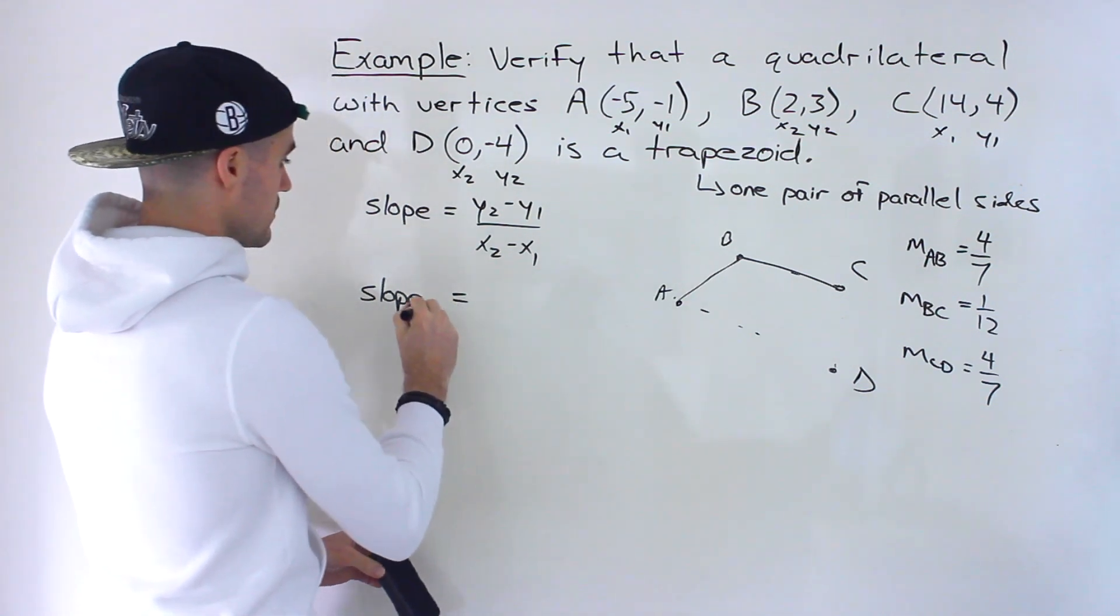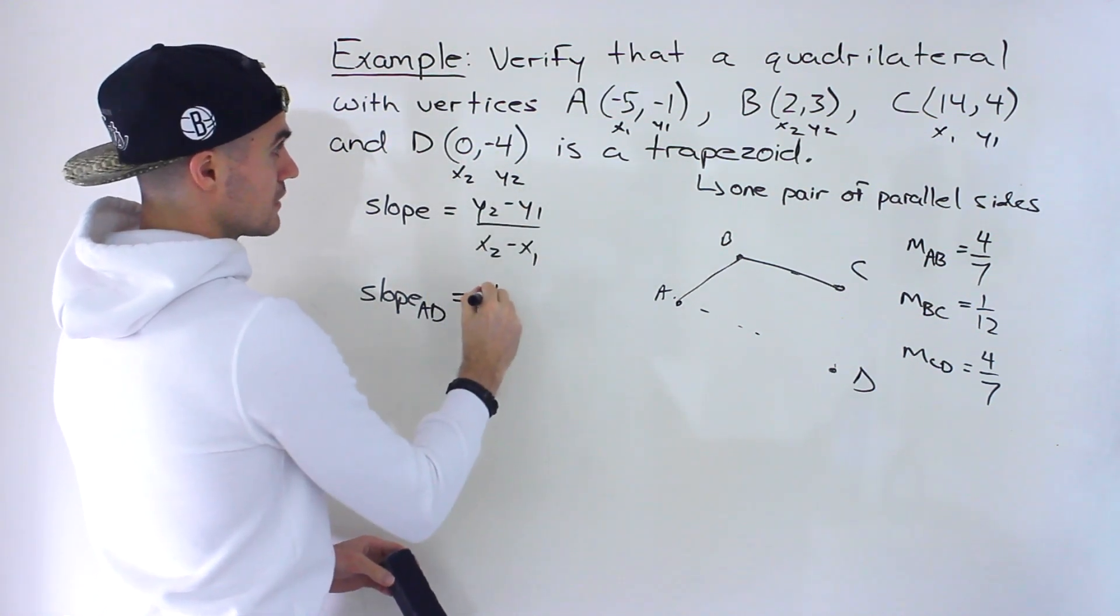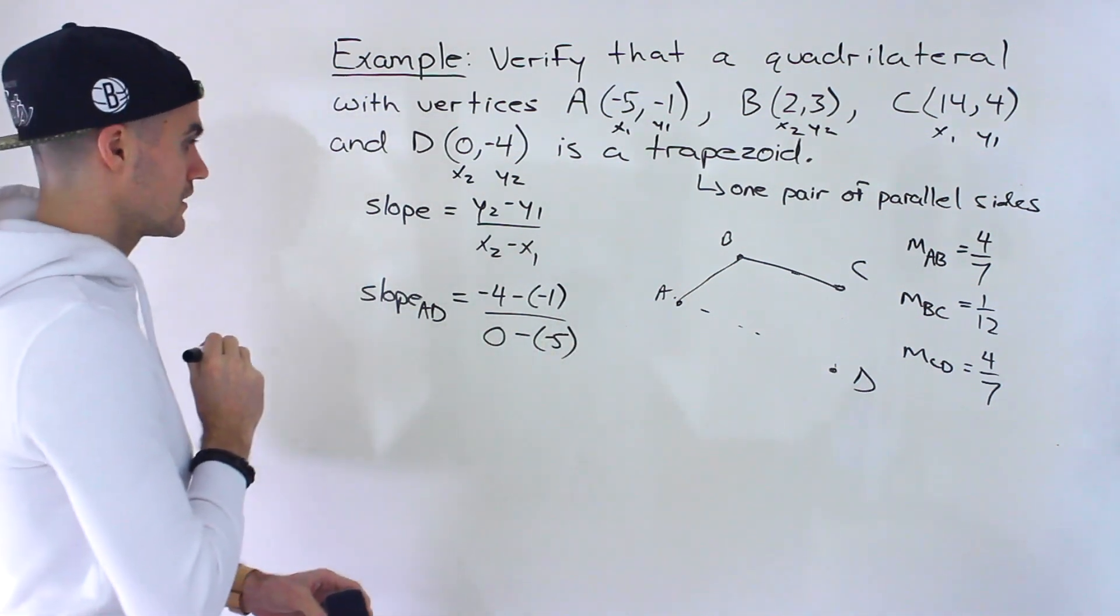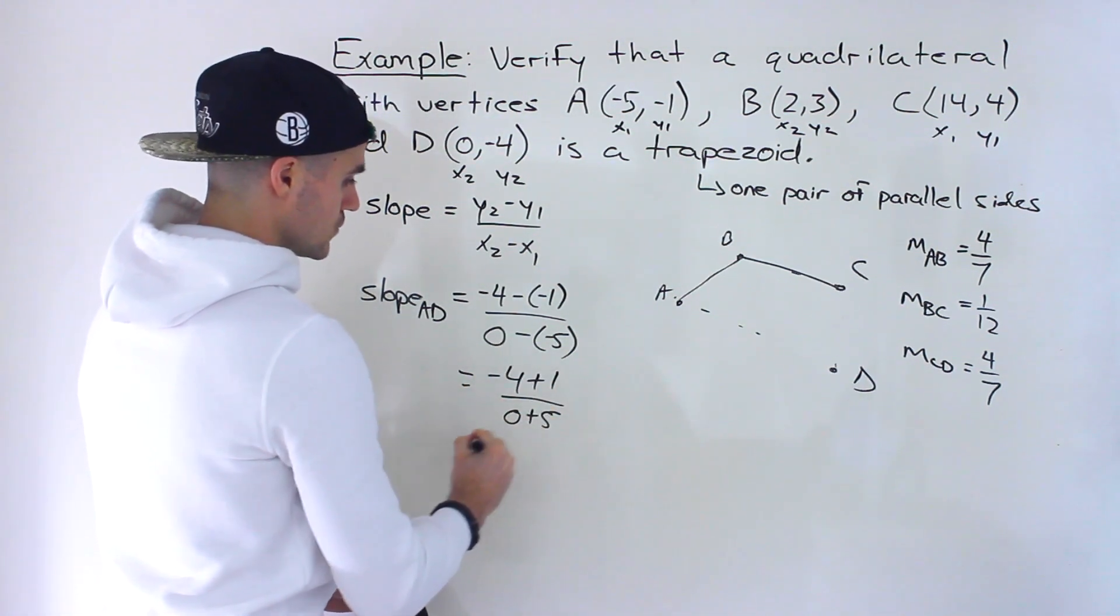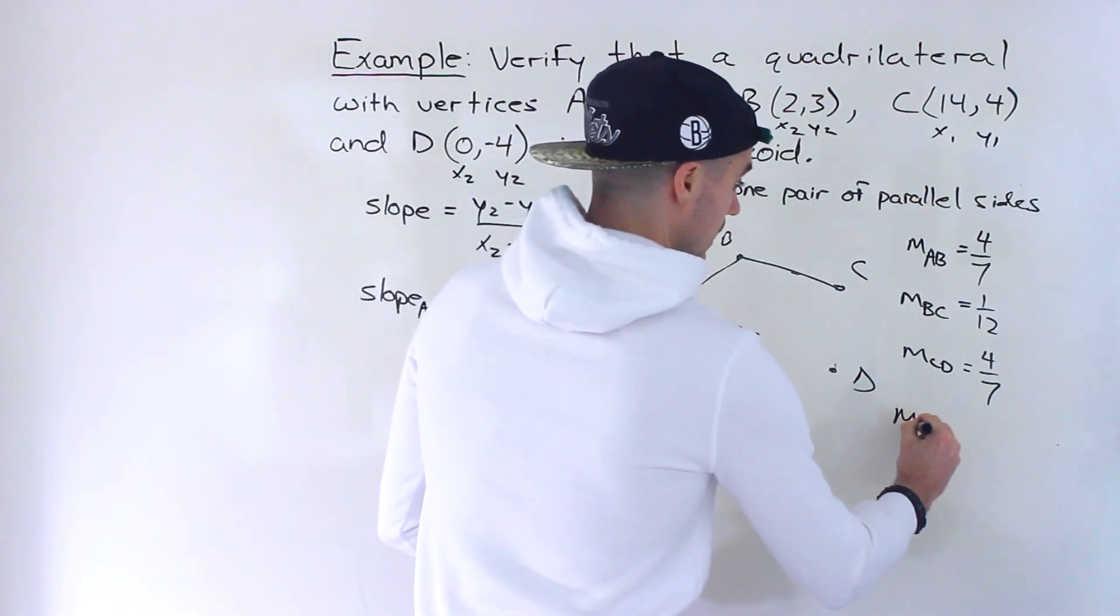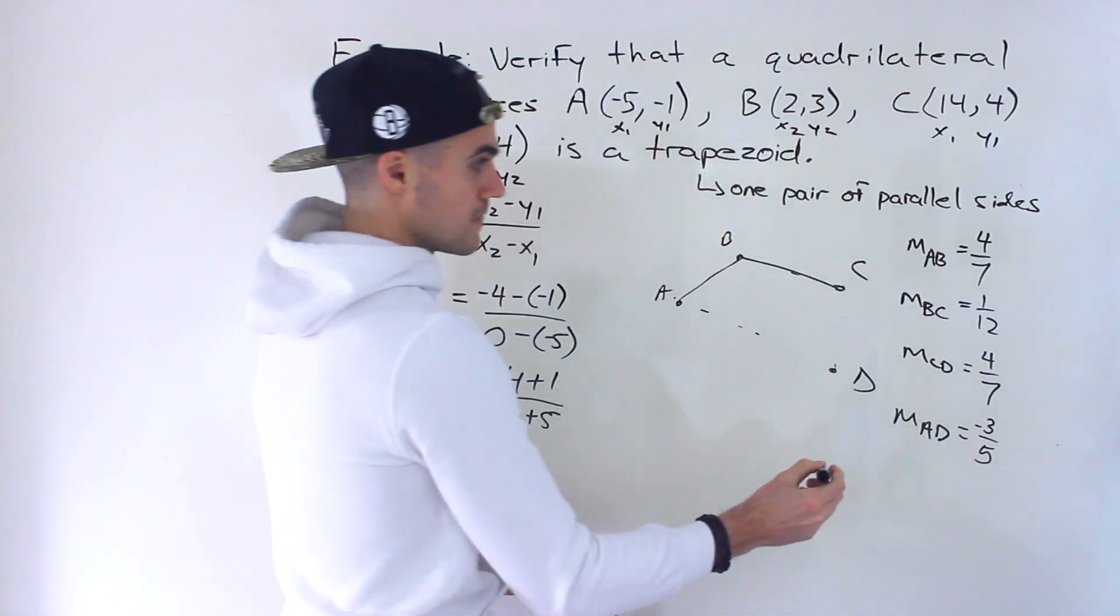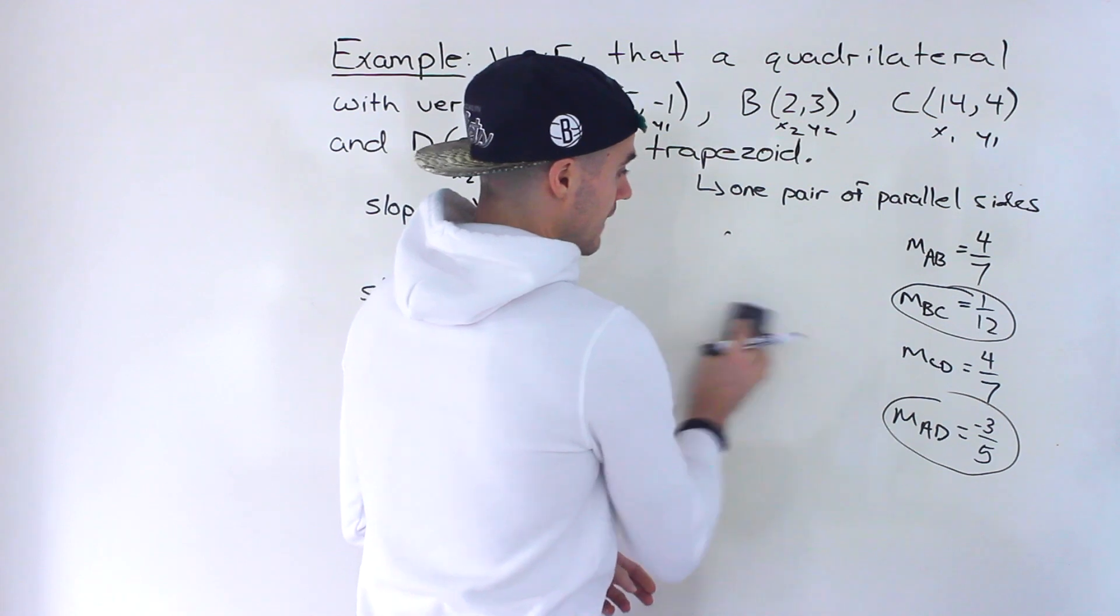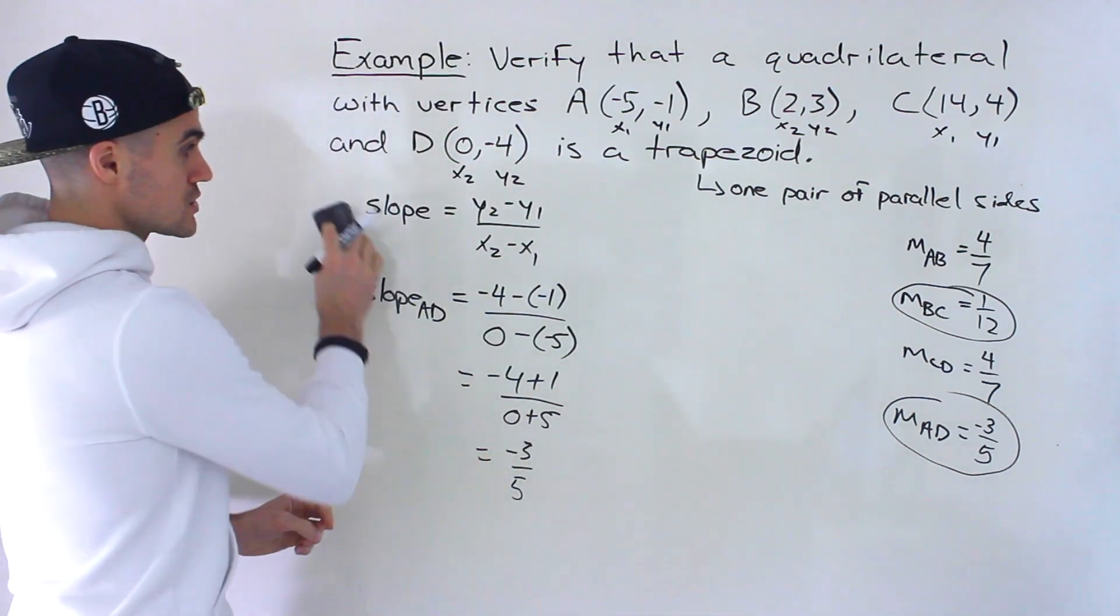So we're dealing with AD now. So we got D, we have A, so those are all already labeled correctly. So we got y2 which is -4 minus y1 which is -1 over x2, 0 minus -5 like that. So we would end up with -4 plus 1 over 0 plus 5 which would give us -3 over positive 5. That doesn't simplify any further. And so AD would be, the slope of it would be -3 over 5. And so notice that these two sides BC and AD are non-parallel and then we have one pair of parallel sides which is the AB and then the CD both of those have slopes of 4 over 7.